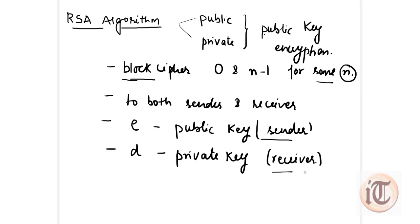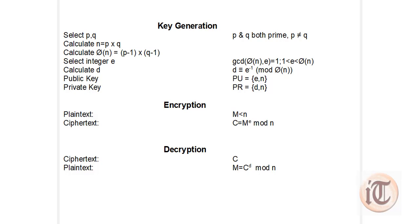There is a step-by-step procedure for this algorithm. We will first explain the algorithm and then take an example of how it works. The algorithm consists of mainly three parts: one is key generation, another one is encryption, and the third one is decryption.